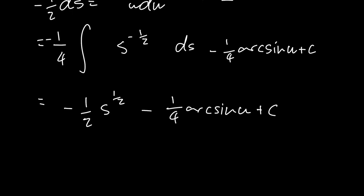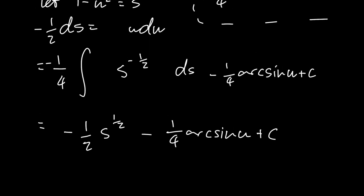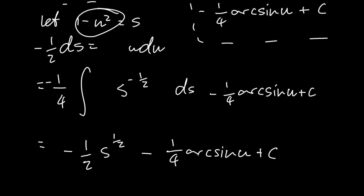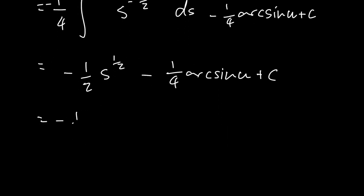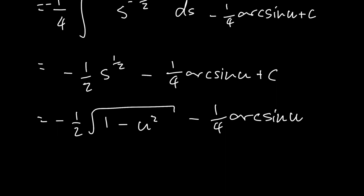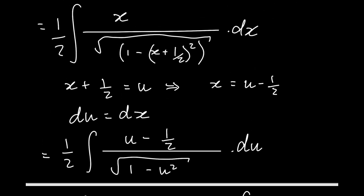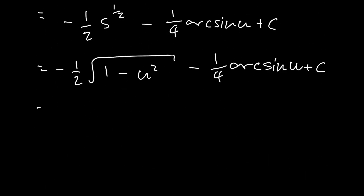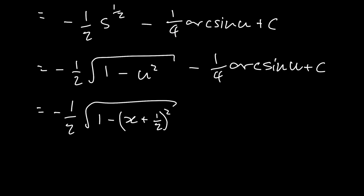Now we make the substitutions back to express this in terms of x. We have this s that we need to express in terms of u first. So s equals 1 minus u squared, giving us minus 1 over 2 times the square root of 1 minus u squared, then minus 1 over 4 arc sine of u plus c. Our whole integral is now expressed in terms of u, but we want it in terms of x. Since u equals x plus 1 over 2, we substitute back: minus 1 over 2 into the square root of 1 minus x plus 1 over 2 squared, minus 1 over 4 times arc sine of x plus 1 over 2, plus c.